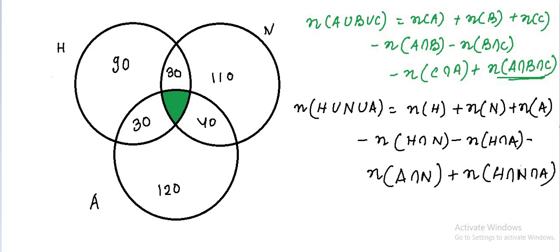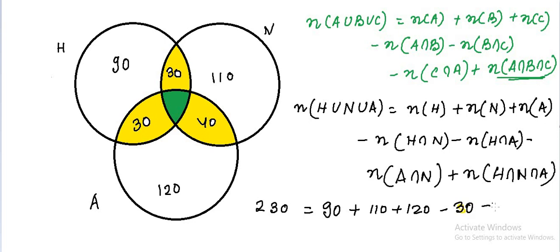Now we already have the values. There were total 230 students whose survey was taken, so H union N union A equals 230. Substituting: 230 equals 90 plus 110 plus 120, then subtract the intersections — minus 30, minus 40, minus 30. Let us consider the value for all three subscribed as x, so we have to find the value of x.